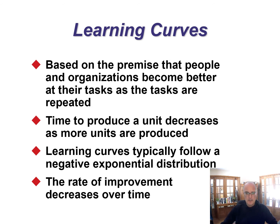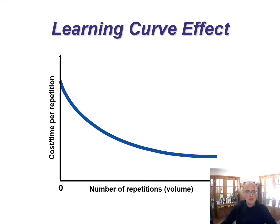Learning curves typically follow a negative exponential distribution. That's good to know, but it's not something you'll need to calculate because we're going to show you three approaches. The improvement is dramatic at the beginning and the rate of improvement decreases over time. So as you get better at something, your ability to improve on it goes down. That makes intuitive sense, and that's the premise here in calculating learning curves.